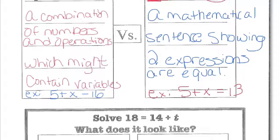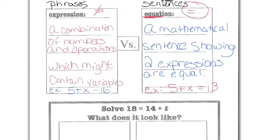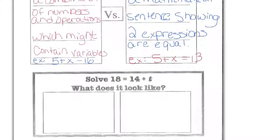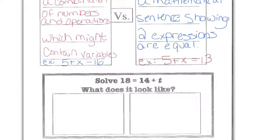So let's go ahead and see what we can do to try to figure out how we might try to solve, be detectives and solve for a variable, to figure out what a variable is. So we have down here an equation that says solve 18 equals 14 plus t. What does it look like? First, let's draw it out. If we pretend that we have a scale, our scale must be balanced.